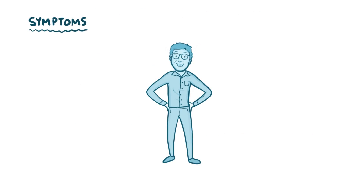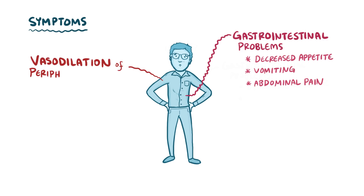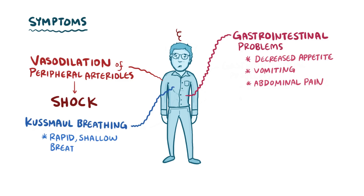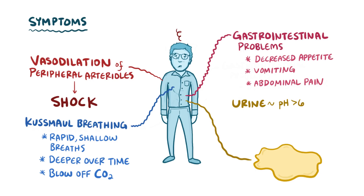Initially symptoms of renal tubular acidosis include gastrointestinal problems like decreased appetite, vomiting, and abdominal pain, but if it's left untreated, severe metabolic acidosis can lead to vasodilation of peripheral arterioles which can cause shock. Like other causes of metabolic acidosis, there's a compensatory pattern of breathing called Kussmaul breathing, where a person initially takes rapid, shallow breaths that get deeper over time, in order to blow off the carbon dioxide. Also, the urine tends to be more alkaline than normal, typically greater than a pH of 6, especially in renal tubular acidosis type I and can sometimes happen in the acute setting for renal tubular acidosis type II.